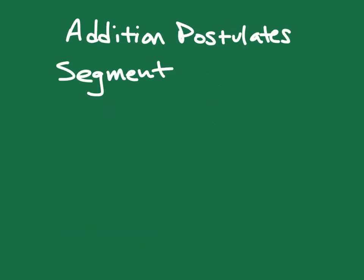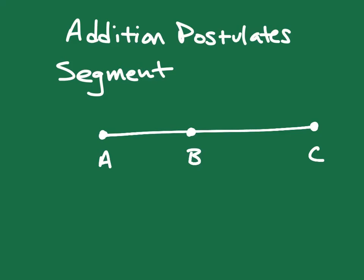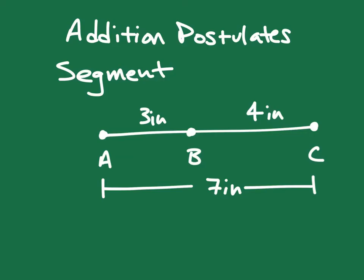The last things I want to talk about are the addition postulates. The segment addition postulate states that if I have a segment made up of three points A, B, and C, and AB equals 3 inches and BC equals 4 inches, then the total length from A to C is 7 inches. We get that by adding the two smaller pieces together: segment AB plus segment BC equals segment AC.